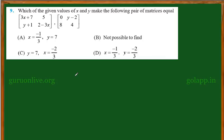Which of the given values of X and Y make the following pair of matrices equal? That is, 3X plus 7, Y plus 1, 5, 2 minus 3X, and one more matrix: 0, 8, Y minus 2, 4.